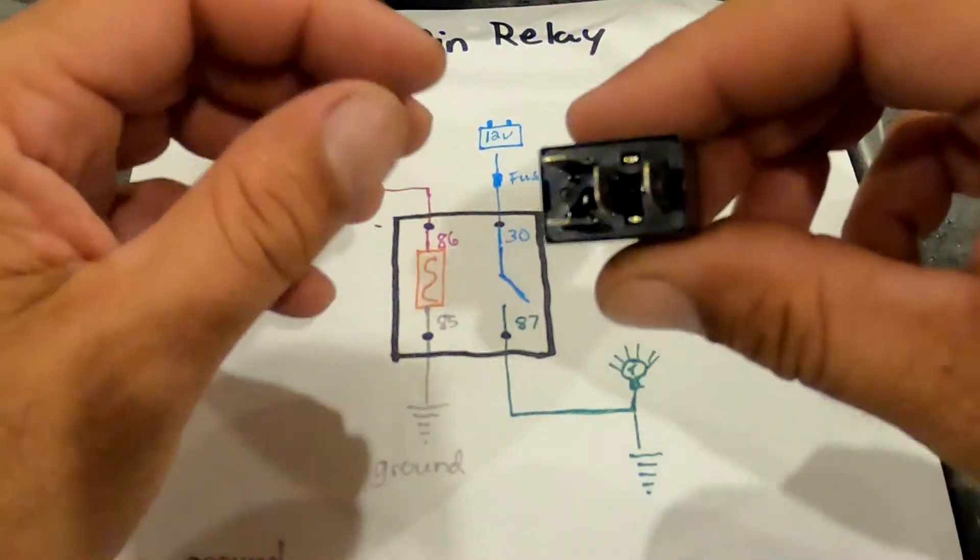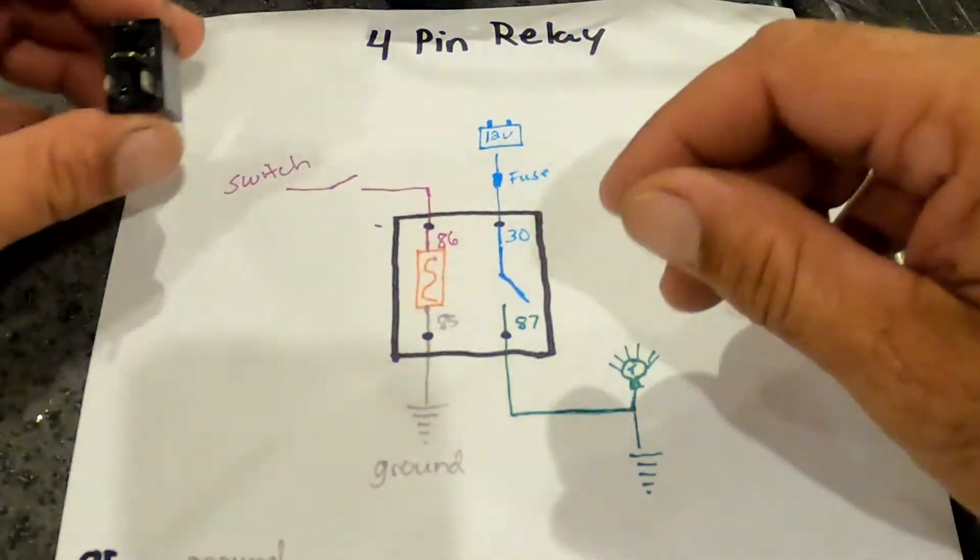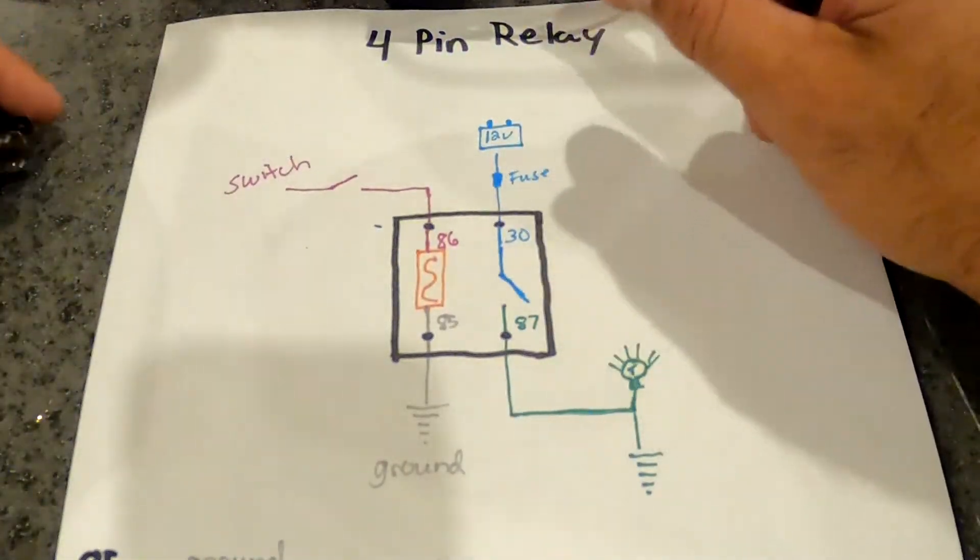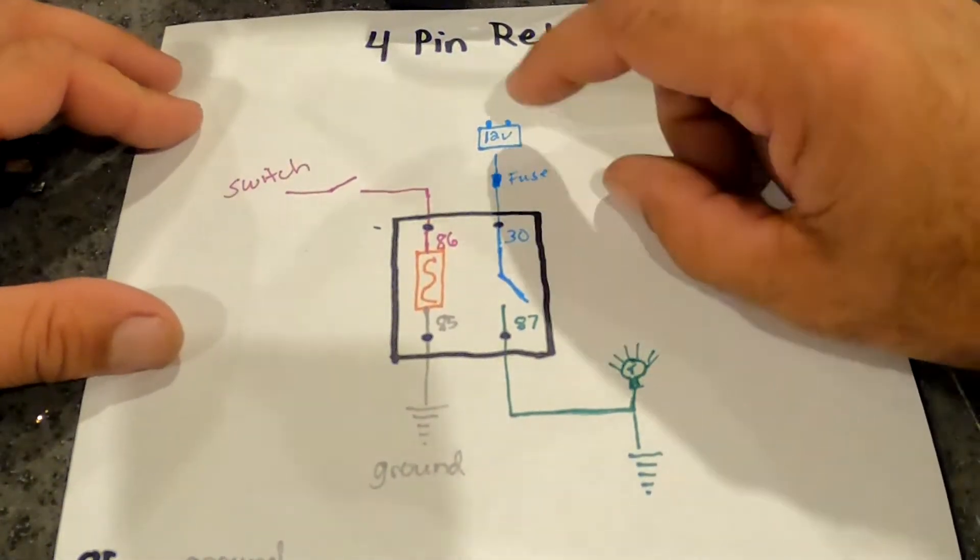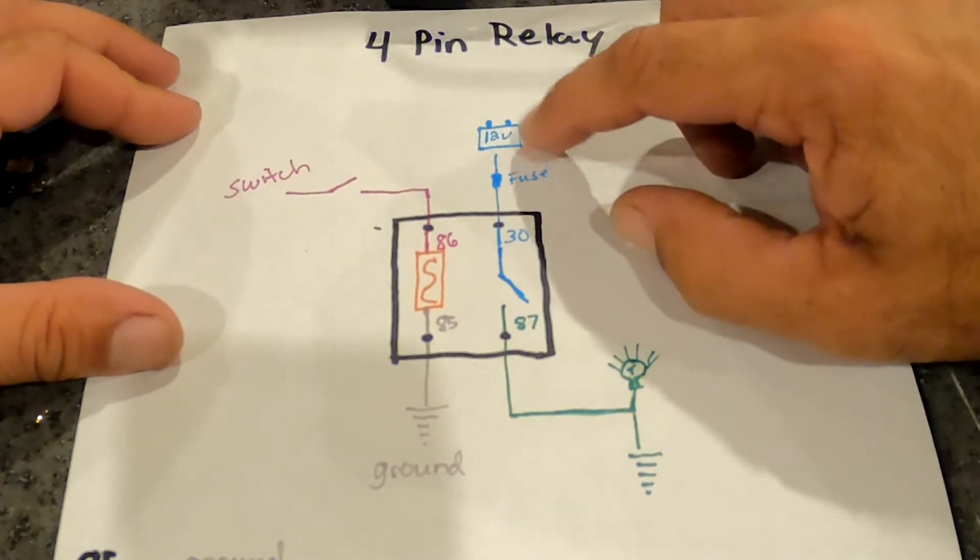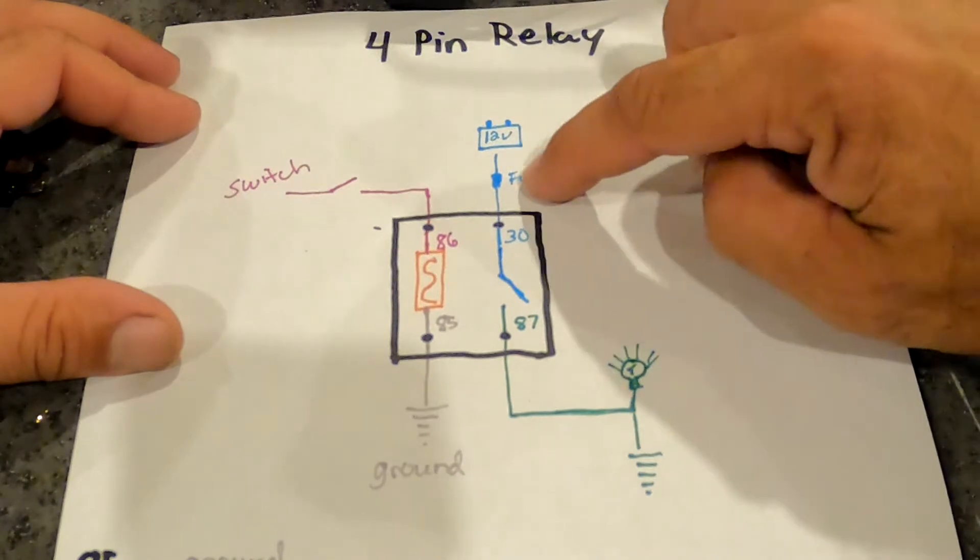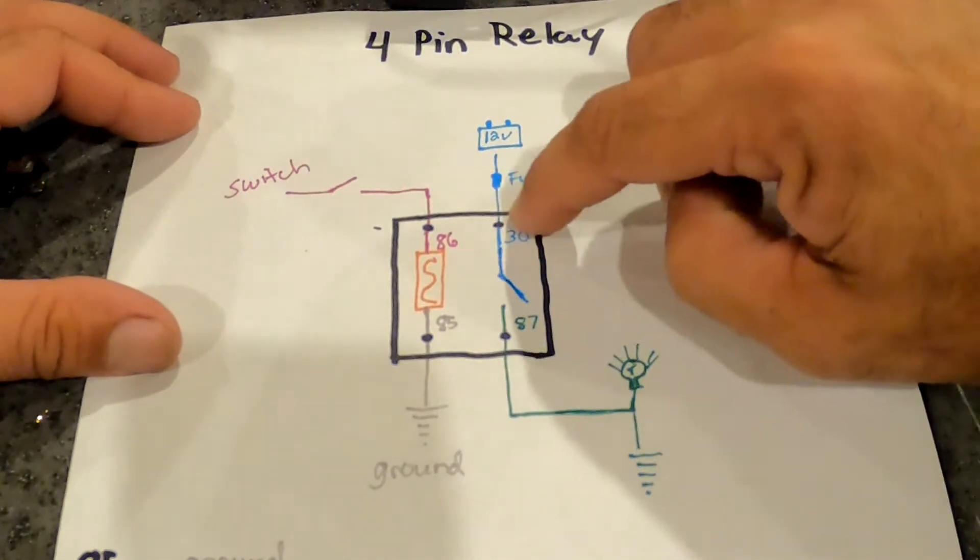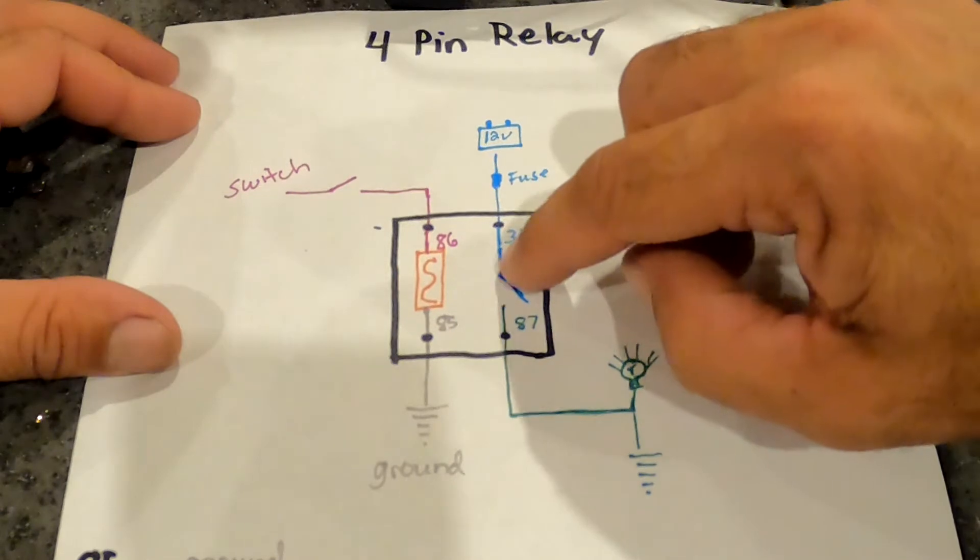So what actually happens here is this is your 12 volt power supply. You come from your car battery to a fusible link, come into pin 30, and this will activate this pin.